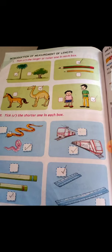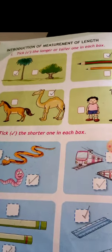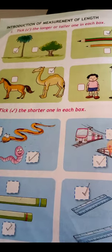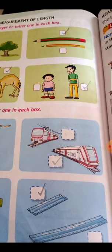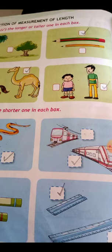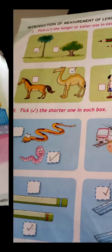First picture, two trees are given. You can see in your book, one tree is big, one tree is small. The bigger tree, the taller one, tick the longer one. Second, you can see two pencils. The green pencil is taller, tick on that pencil.